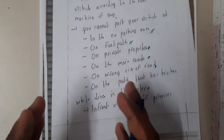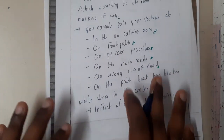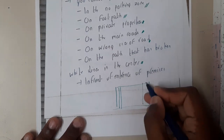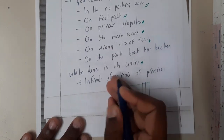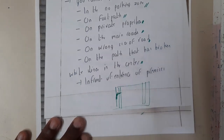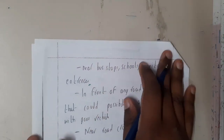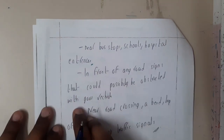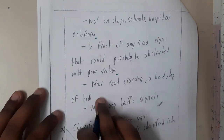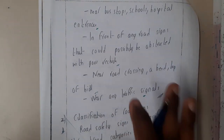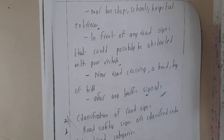You should not park on the wrong side of the road or on a path that has a broken white line in the center. According to rules, roads have white lines and your parked vehicle should not touch them. You also cannot park in front of an enterprise, near a bus stop, hospital, or school, in front of any road design causing obstruction, near road crossings, at the top of a hill, or near any traffic signal.